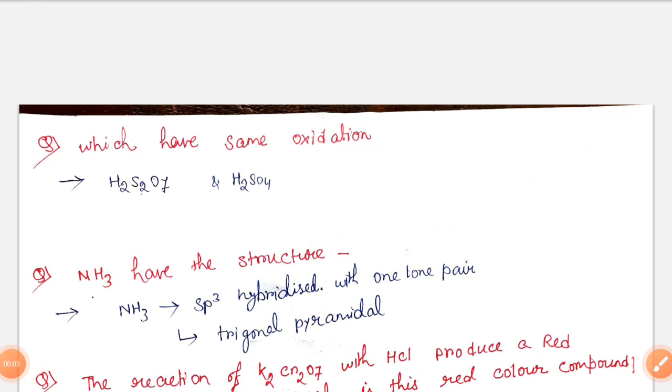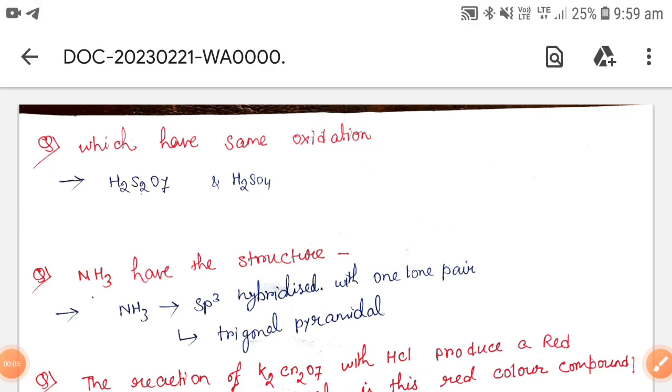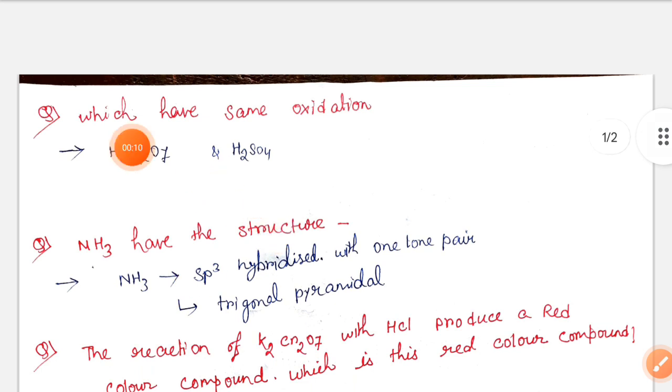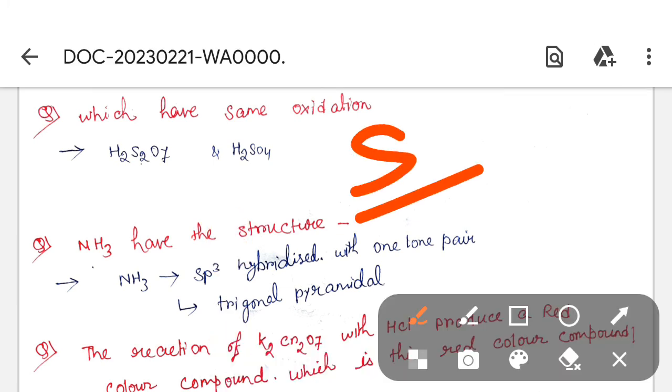Good morning, all of you. Today we will discuss the next part of the PGT chemistry questions. Let's see. First question is which have same oxidation state. The correct answer is H2S2O7 and H2SO4. In this case they asked the oxidation state of sulfur, and in both cases it's plus six oxidation state.